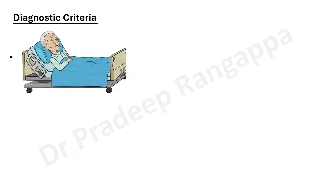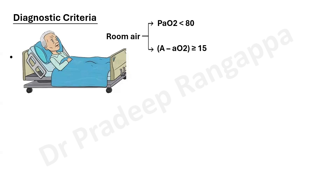The diagnostic criteria for hepatopulmonary syndrome: on room air, the PaO2 should be less than 80, and importantly the A-a gradient should be more than 15. This A-a gradient criterion applies across all severity grades. For patients older than 64 years, the A-a gradient threshold increases to more than 20.